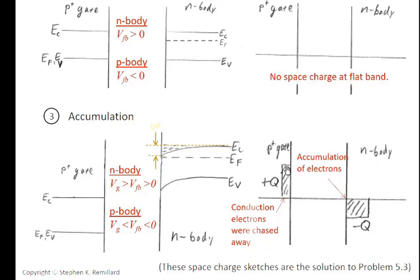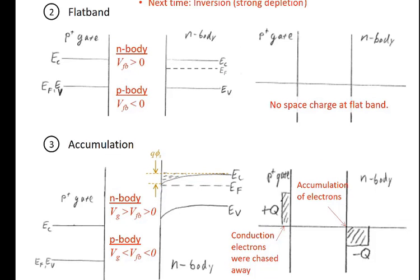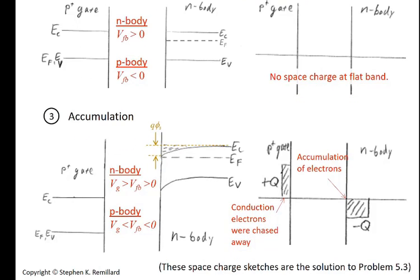So those are the conditions for biasing a MOS capacitor. There's one more condition, which is inversion, which we're going to talk about next, which is what you get if you just keep driving depletion until that Fermi energy is close to the wrong band edge. And that's coming up next. And by the way, problem 5.3 in the book asks for sketches of the space charge distribution for these various cases. So this is kind of the solution to that.